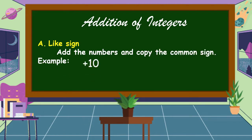For example, positive 10 plus positive 8. Our addends are both positive, so we're going to add the numbers. 10 plus 8 is equal to 18, and copy the common sign which is positive.